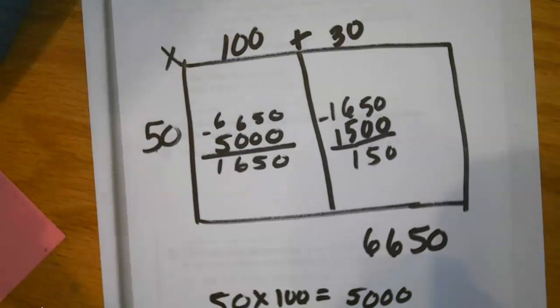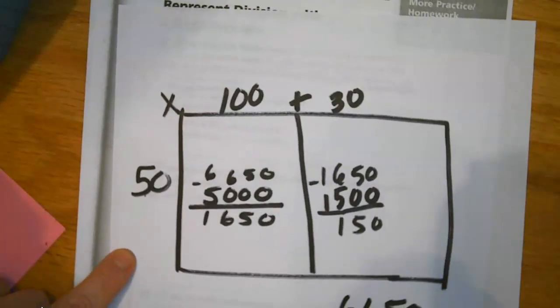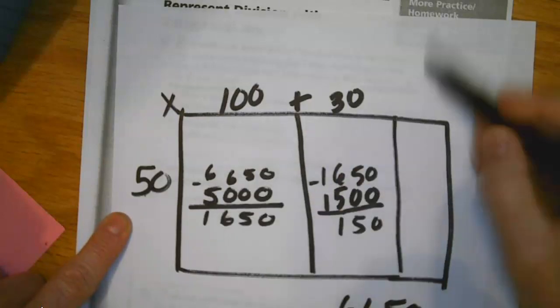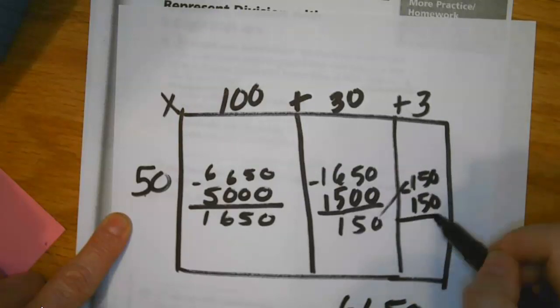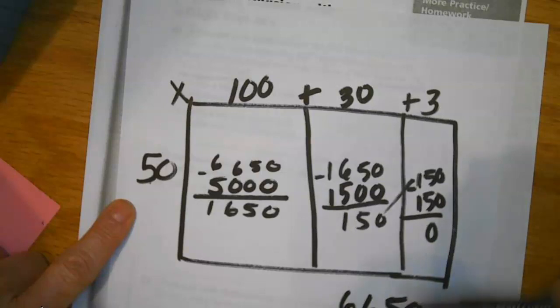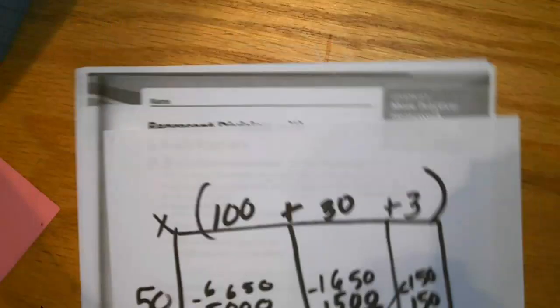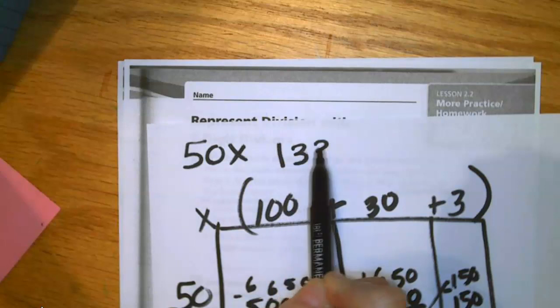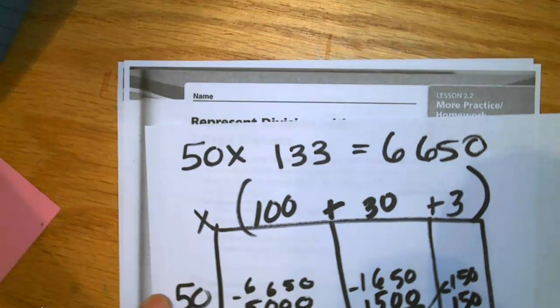Now this is getting to a number that I can really think about. I know that 50 times 3 is equal to 150, and so that's exactly the amount that I need with no remainders left over on this one. So I'm going to say 50 times 3 is equal to 150, and I subtract that from what's left, and I have zero left over. Now right up here I have that example of the distributive model. So 6,650 has been broken into 100 plus 30 plus 3. That tells me that 133 times 50 is equal to 6,650.